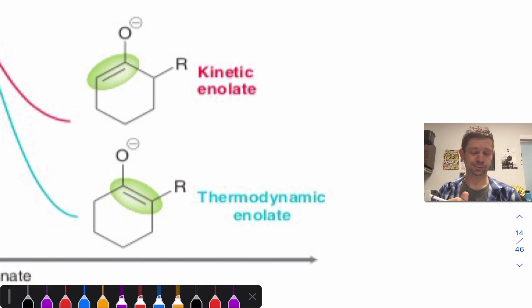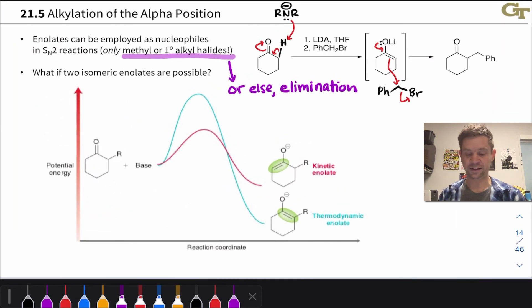One thing to notice about these double bonds is, this is a less substituted double bond, only three substituents: O minus, this guy, and this guy. And the bottom enolate is more substituted, tetrasubstituted, one, two, three, four. So there's a difference in substitution pattern here, and we know from earlier conversations about enols, and the same applies to enolates, that the more substituted enolate is more stable. That's why this is lower in energy than this. The more stable enolate is what's known as the thermodynamic enolate.